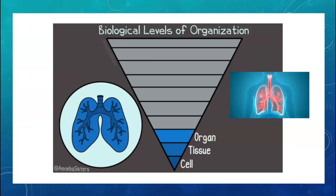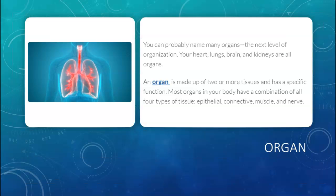What's interesting is that the word 'organize' contains the word 'organ.' Individual specific cells all performing the same function organize into tissues. Tissues that are all performing the same function organize into organs. For example, lung cells will organize into lung tissue, which will then organize into the lung — the organ itself. You can probably name many organs. Your heart, lungs, brain, and kidneys are all organs. An organ is made up of two or more tissues and has a specific function.